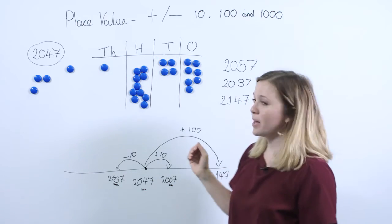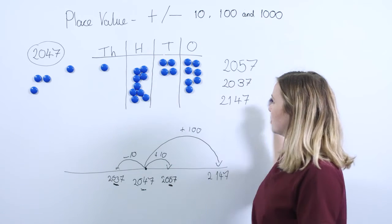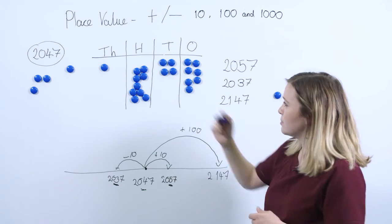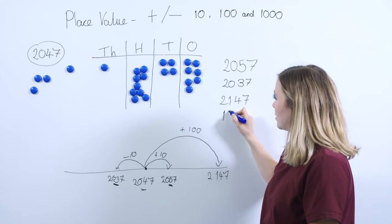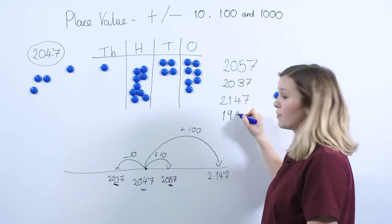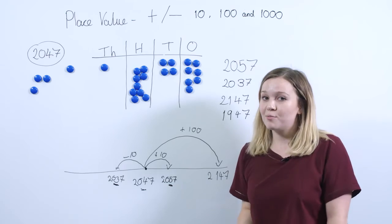And this time they should be able to see what happens to the number. So I've got 1 thousand, my 10 hundreds, and I'm just going to take one of those away. So if we ask them to represent this number, we've got 1 thousand, we've got 900, we've still got four tens and we've got seven ones. So the number that we get to is 1947.